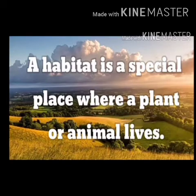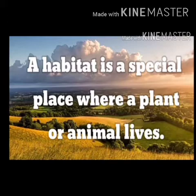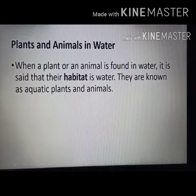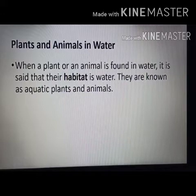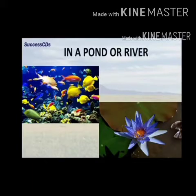Okay, so before starting with this, we'll learn about habitat. Habitat is the place where a particular type of animal or plant is usually found. All the organisms are categorized according to their habitat. So students, when a plant or an animal is found in water, it is said that their habitat is water. They are known as aquatic plants and animals. When plants and animals live in water, they are considered as aquatic organisms.